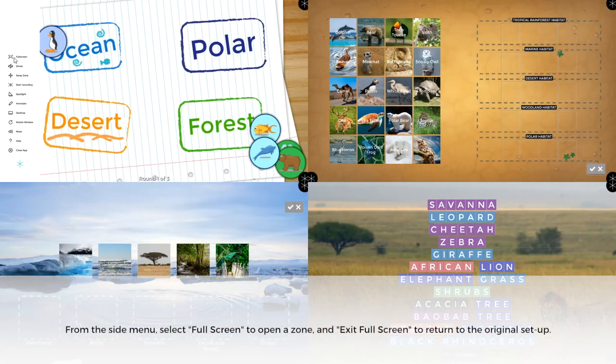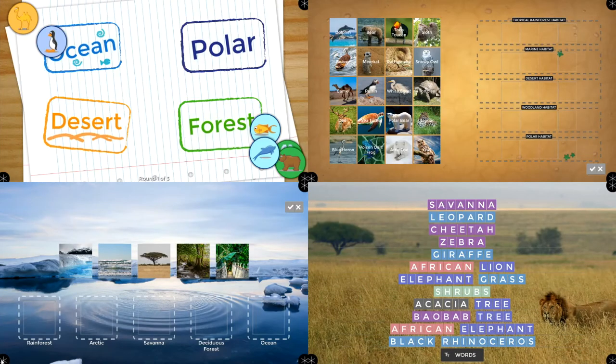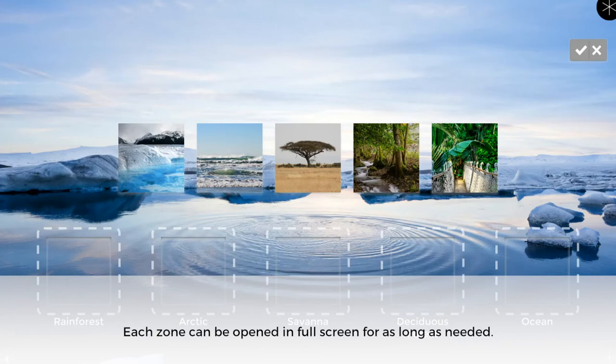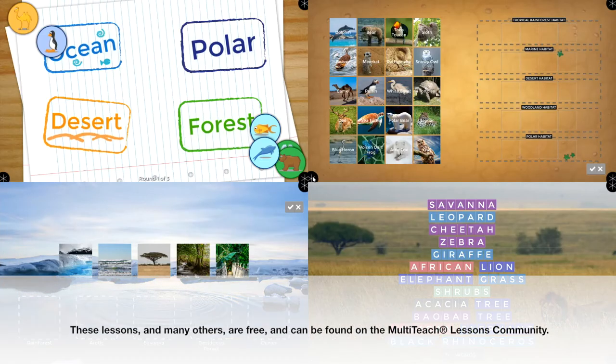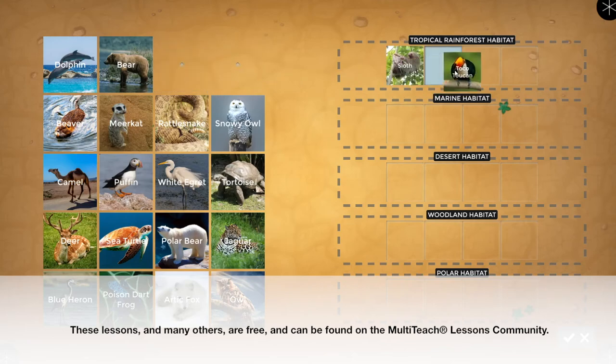From the side menu, select Fullscreen to open a zone and Exit Fullscreen to return to the original setup. Each zone can be opened in fullscreen for as long as needed. These lessons, and many others, are free and can be found on the MultiTeach Lessons community.